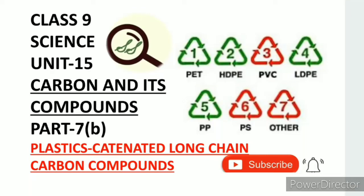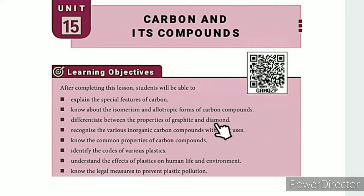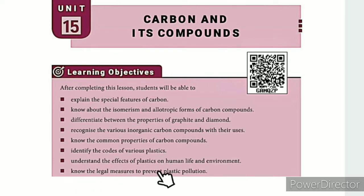Greetings from SS Class 9 Science Unit 15: Carbon and Its Compounds, Part 7B — Plastics: Catenated Long-Chain Carbon Compounds. The learning objectives are: explain the special features of carbon; know about isomerism and allotropic forms; differentiate between graphite and diamond; recognize inorganic carbon compounds; identify codes of various plastics; understand the effects of plastics on human life and environment; and know the legal measures to prevent plastic pollution.